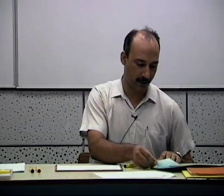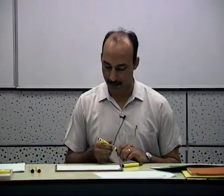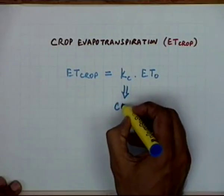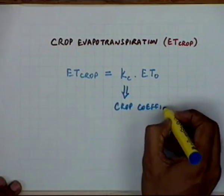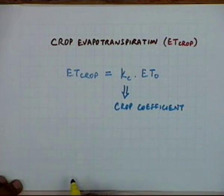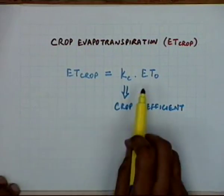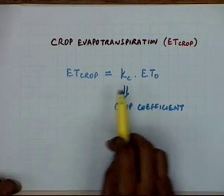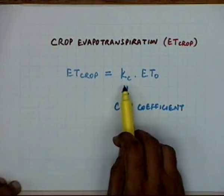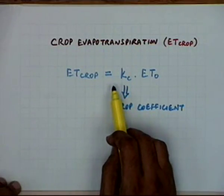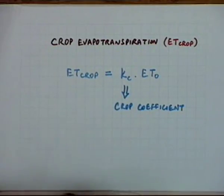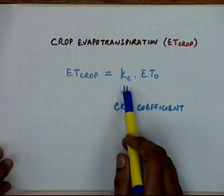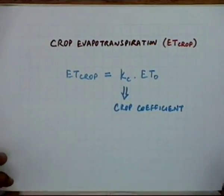Today we will start with the effect of crop characteristics and how we incorporate that effect into the evaluation of ET crop. That is done by defining the crop coefficient Kc. Since we know ET₀, ET₀ can be related to ET crop through a coefficient — the crop coefficient Kc — which can change from crop to crop. We will look at how much it can change, how we find out the values of these crop coefficients for various crops, and what other factors influence this crop coefficient.